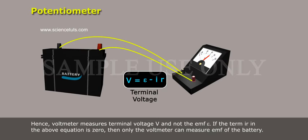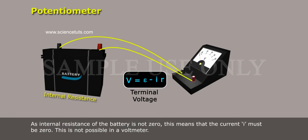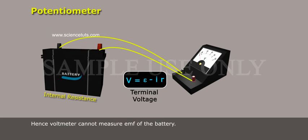If the term I R in the above equation is zero, then only the voltmeter can measure EMF of the battery. As internal resistance of the battery is not zero, this means that the current I must be zero. This is not possible in a voltmeter. Hence, voltmeter cannot measure EMF of the battery.